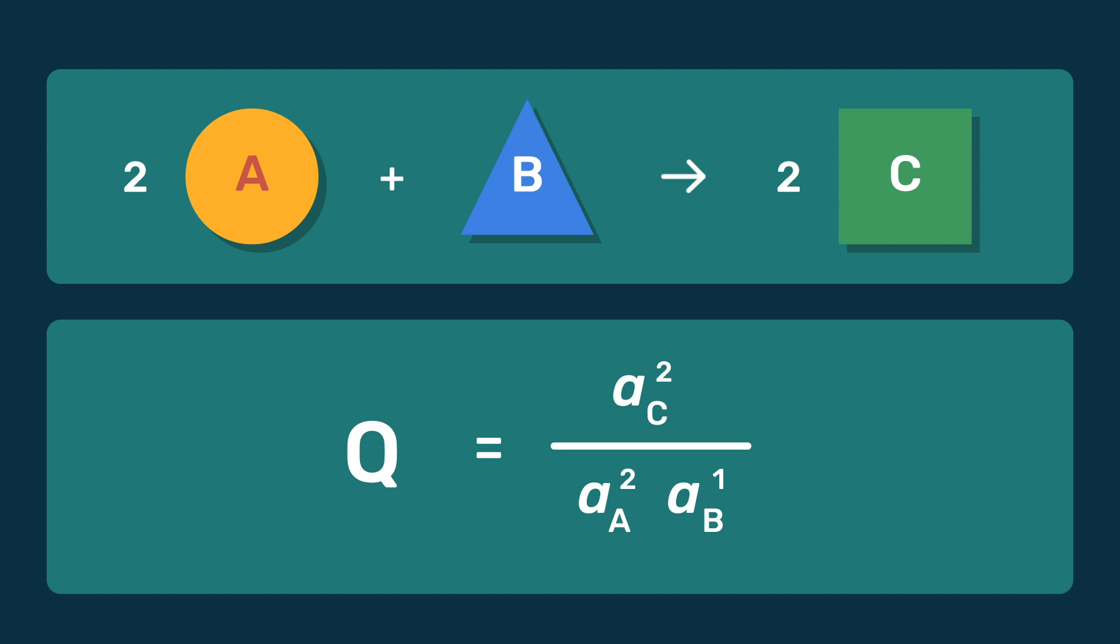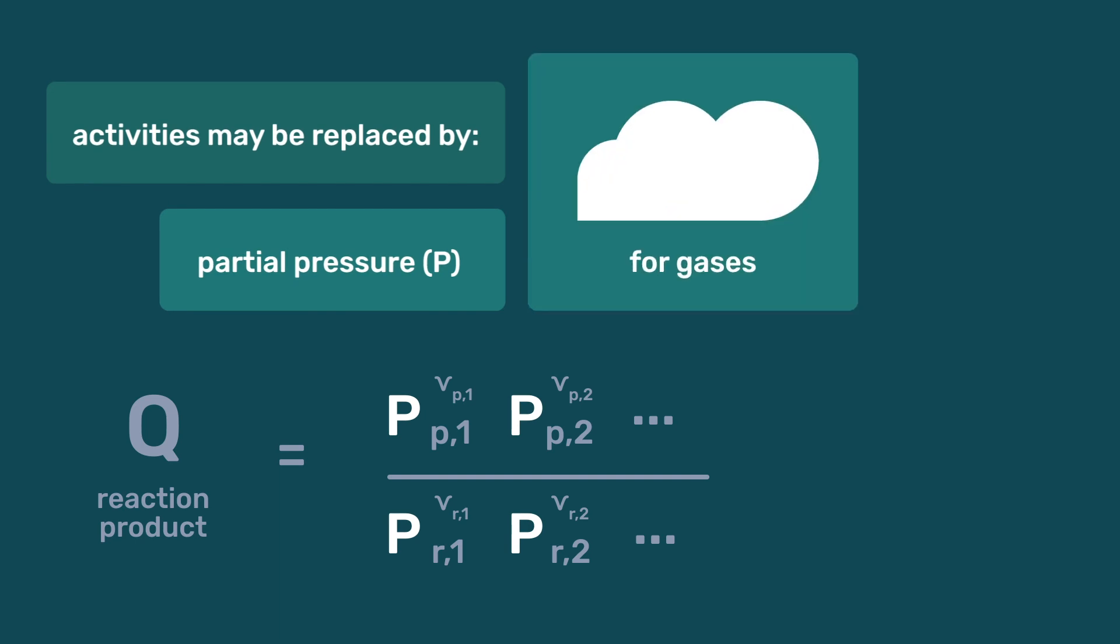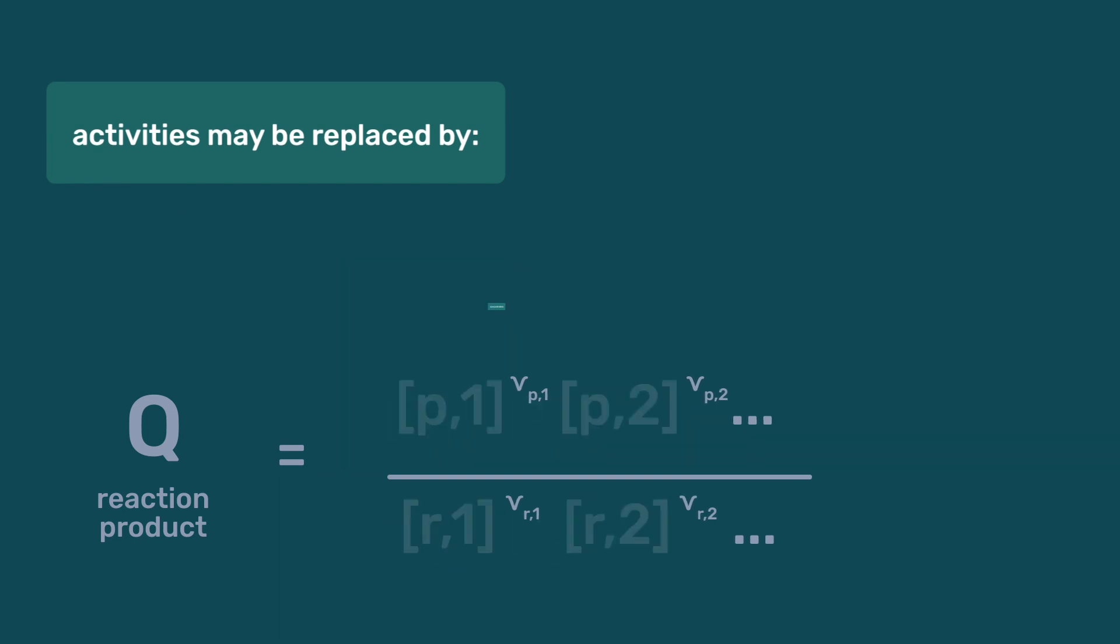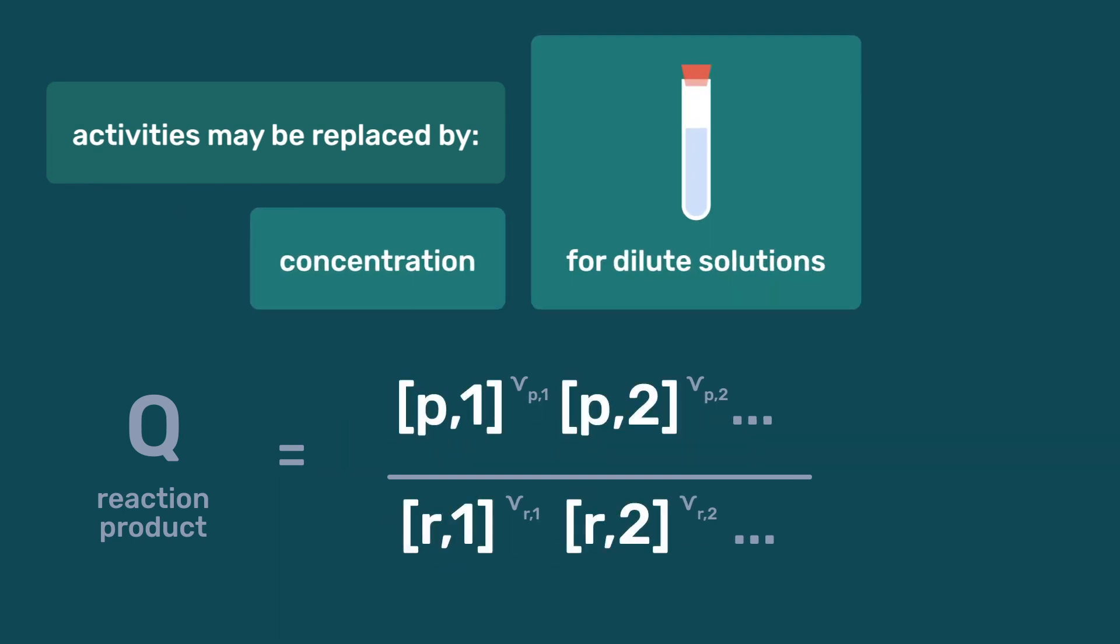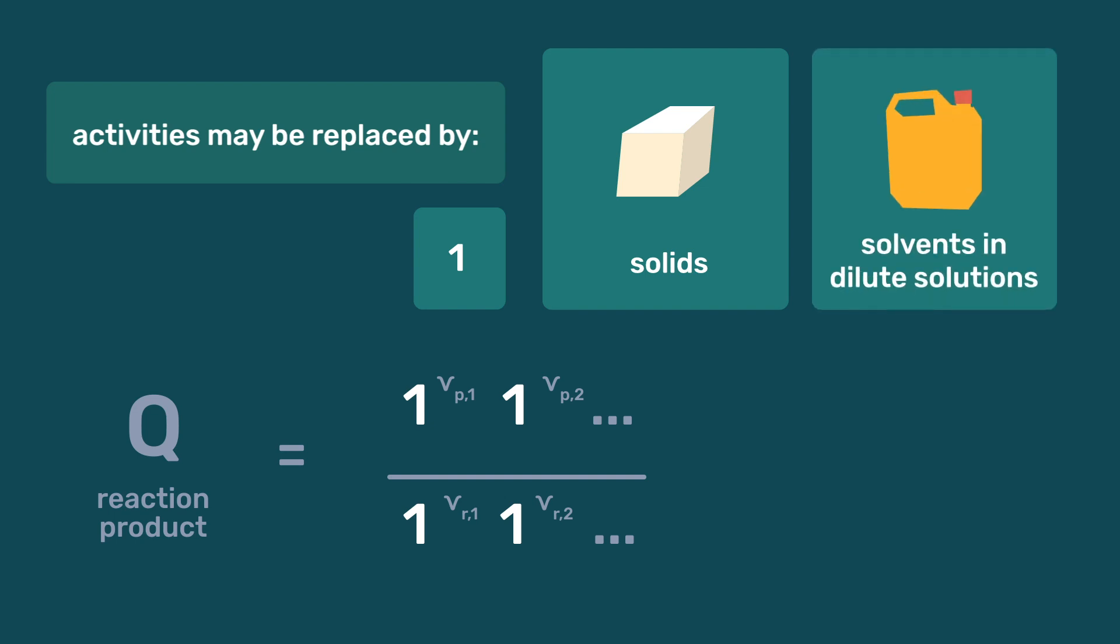In what follows, activities may be replaced by partial pressures for gases and concentrations for dilute solutions. Also, activities are equal to 1 for solids and for solvents in dilute solutions, as water in dilute aqueous solutions.